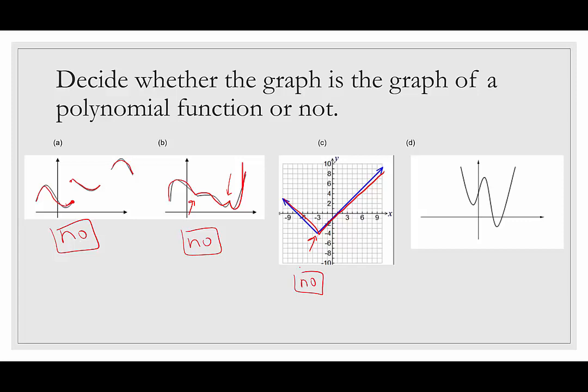Lastly, the final graph is continuous with no sharp points and no breaks, jumps, or gaps. This is an example that is indeed a polynomial function.